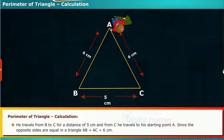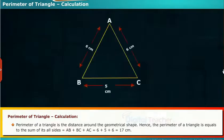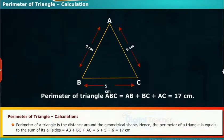Since the opposite sides are equal in a triangle, AB is equal to AC is equal to 6 cm. Perimeter of a triangle is the distance around the geometrical shape. Hence, the perimeter of a triangle is equal to the sum of its all sides, is equal to AB plus BC plus AC.